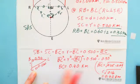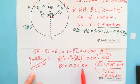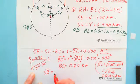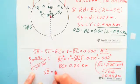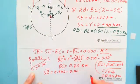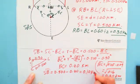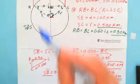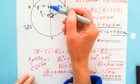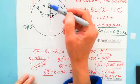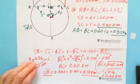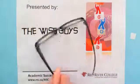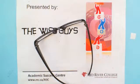Now plugging in: SB equals SC minus BC equals 0.5 minus 0.4, which gives 0.1 kilometer. So SB equals 0.1 km — that is the distance from the park bench to the exit. This is presented by Wise Guys. Thank you, have a nice day.